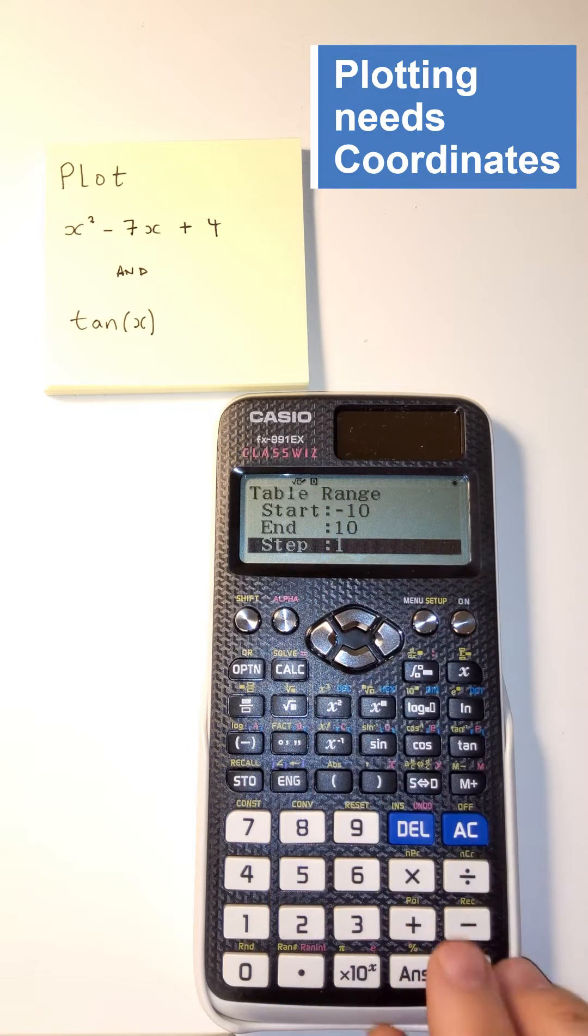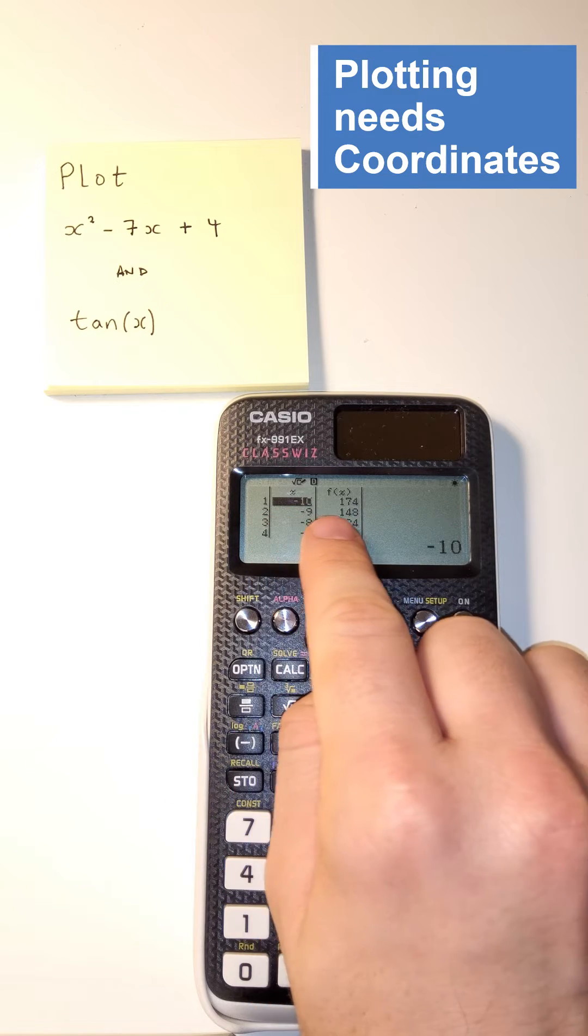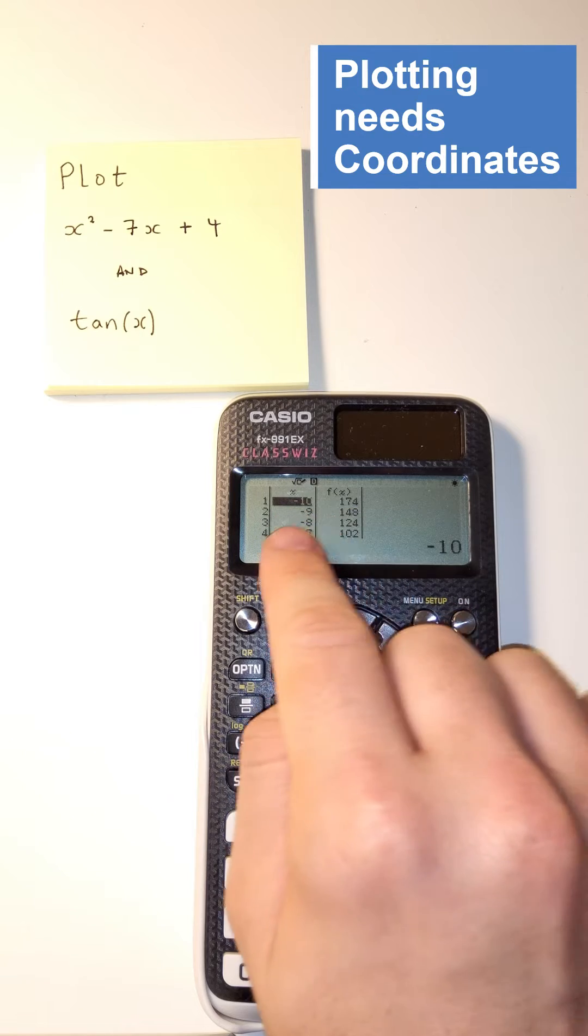That's going to give us a range from negative ten to ten. Press equals at that point, and then we'll get values for our graph at these different values of x. These are coordinates, basically.